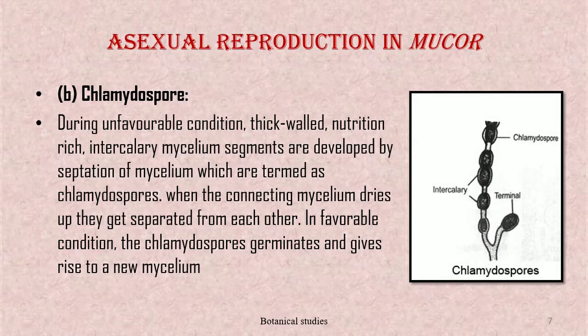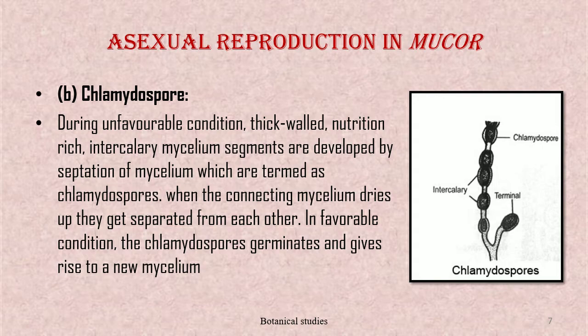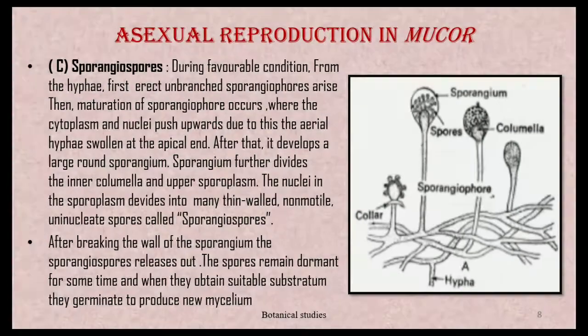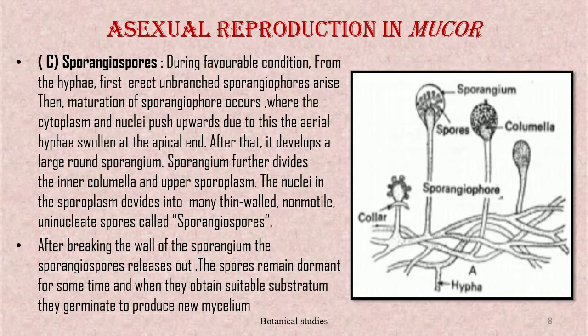Asexual reproduction in Mucor also occurs by the formation of chlamydospores. During unfavorable conditions, thick-walled, nutrition-rich intercalary mycelium segments are developed by septation of the mycelium; these are termed chlamydospores. When the connecting mycelium dries up, they get separated from each other. In favorable conditions, the chlamydospores germinate and give rise to new mycelium.